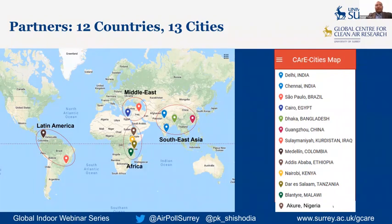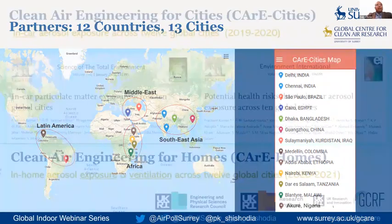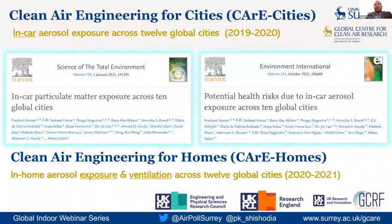In Africa we have Malawi, Tanzania, Ethiopia, and Kenya, and we added Nigeria during the process. These are the cities where we have been focusing, and the first part of the project started in 2019.